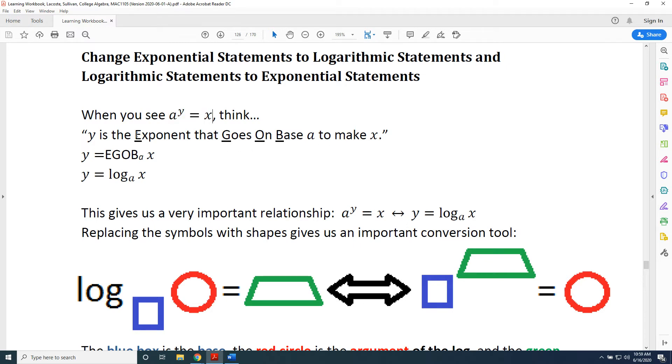Notice this is an EGOB statement: E, G, O, B. So when we convert this word sentence into symbolic algebra, we say y is becomes y equals. The exponent that goes on base becomes EGOB, and the a and the x are the two values that go after EGOB. So we get y equals EGOB ax.